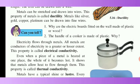Ductility means that a metal can be stretched into wire form. Because of ductility, metals can be drawn into fine wires. Silver, copper, gold, and platinum all exhibit ductility and can be drawn into fine wires. The property of metals being stretched into wires is called ductility.